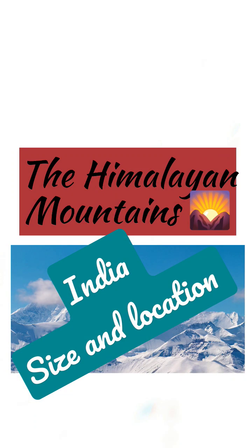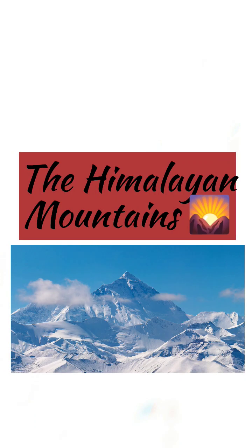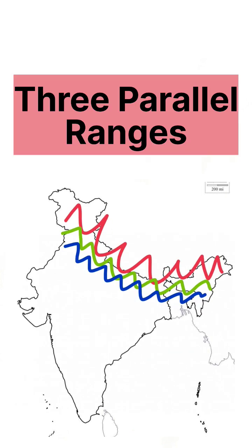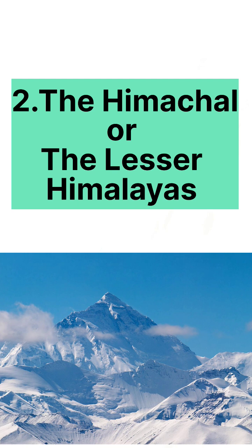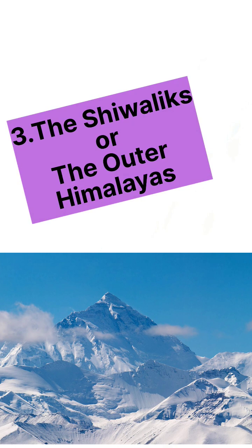Hello everyone. In this video we are going to learn about the Himalayan mountains. It consists of three parallel ranges: number one, the Himadri or the Great Himalayas; number two, the Himachal, also known as the Lesser Himalayas; and number three, the Shivaliks, or the Outer Himalayas.